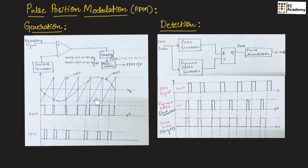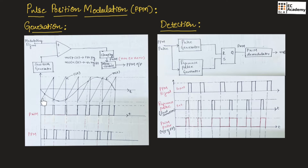As you can observe in this waveform, we have both the carrier signal, which is the sawtooth signal, as well as the message signal, which is a sinusoidal signal. If the message signal is greater than the carrier signal,